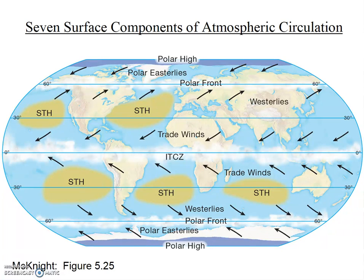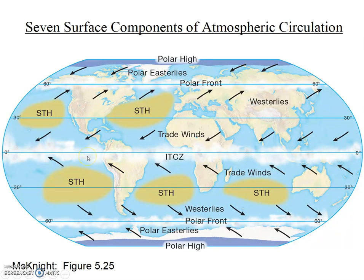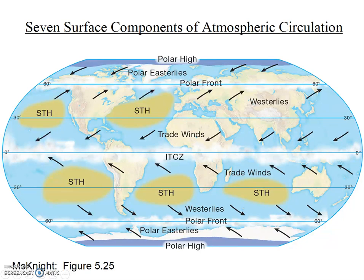Now that you've written the seven components down in your notes, take a look at your notes and identify all seven components on this diagram. Start with the pressure zones: the intertropical convergence zone here at the equator, subtropical highs, the polar front, and the polar high. Then notice the winds: the trade winds blowing towards the equator from the subtropical highs, the westerlies blowing from the subtropical highs towards the polar front, and the polar easterlies from the polar high to the polar front. Again, winds always blow from high to low pressure.